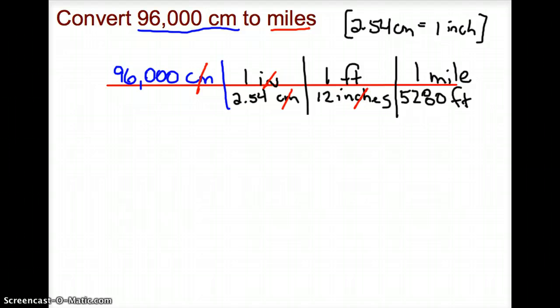Here's where a lot of kids make mistakes. At this point, they've correctly written the train tracks. What you'll need to do to be successful is multiply everything in the numerator: 96,000 times 1 times 1 times 1. And here's where you need to be careful: dividing it by everything in the denominator.